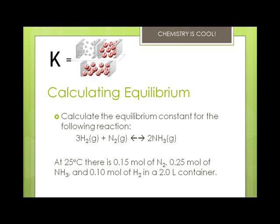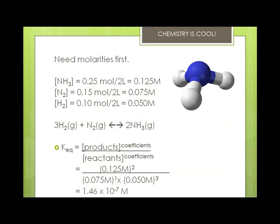So we're going to calculate: at 25 degrees Celsius there's 0.15 moles of nitrogen, 0.25 moles of ammonia, and 0.10 moles of hydrogen in a 2-liter container. We need to find the molarity first. The concentration of ammonia is 0.25 moles per 2 liters, giving 0.125 molar. Nitrogen is 0.075 molar and hydrogen is 0.05 molar. When we look at this reversible reaction, we take the concentrations of the products with their coefficients as the superscript, divided by the reactants with their coefficients as the superscript. So we did 0.125 molar squared, divided by 0.075 molar times 0.05 molar cubed.